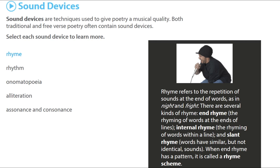Let's look at rhyme. Rhyme refers to the repetition of sounds at the end of words, as in 'night' and 'fright.' There are several kinds of rhyme: end rhyme — the rhyming of words at the end of lines; internal rhyme — the rhyming of words within a line; and slant rhyme — where words have similar but not identical sounds. When each rhyme has a pattern, it is called a rhyme scheme.